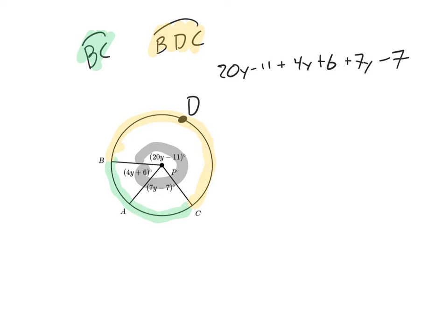It's a pretty simple equation from there. Your like terms you just add those all together, so 20 plus 4 plus 7 is 31y, and negative 11 plus 6 and negative 7 gives you negative 12.